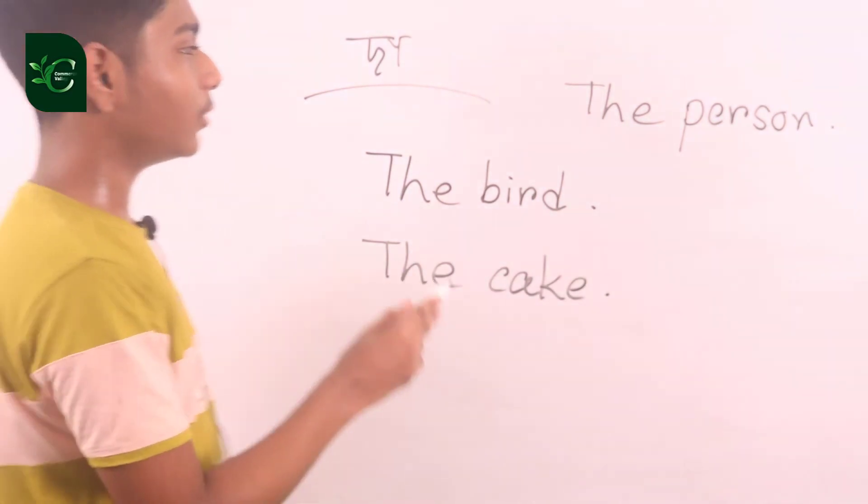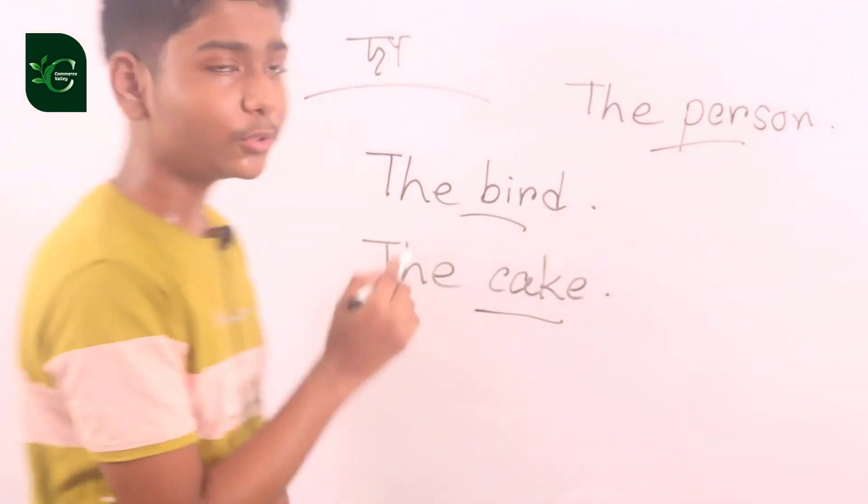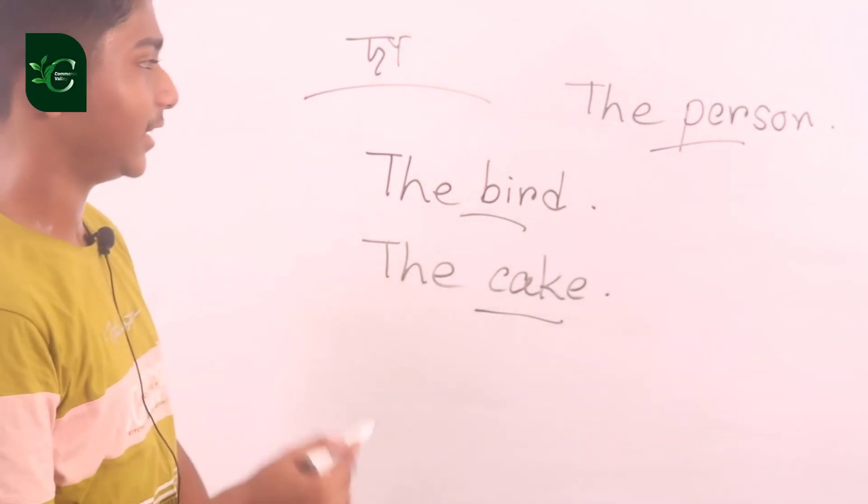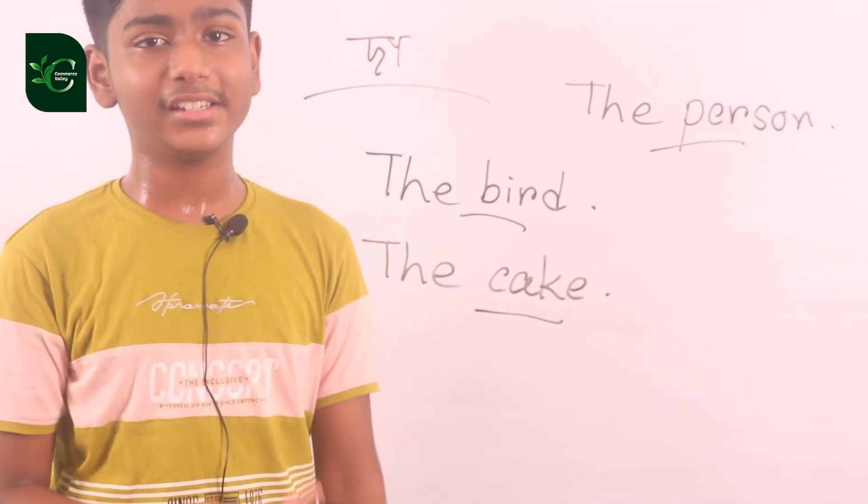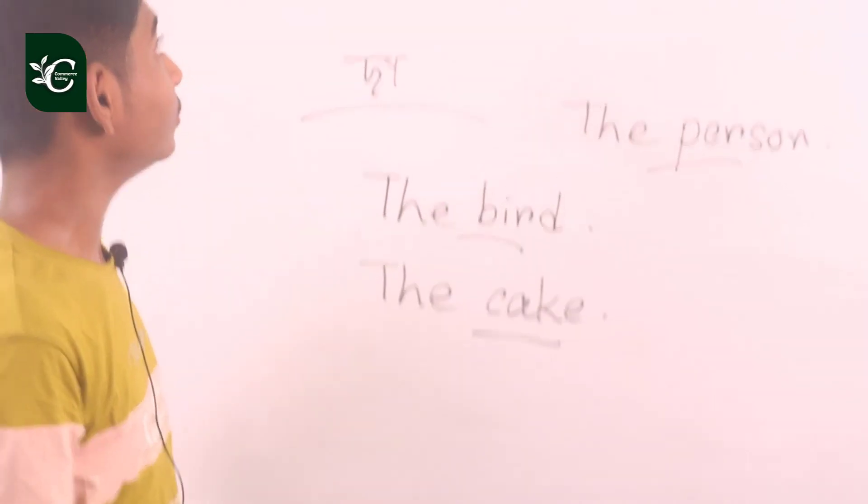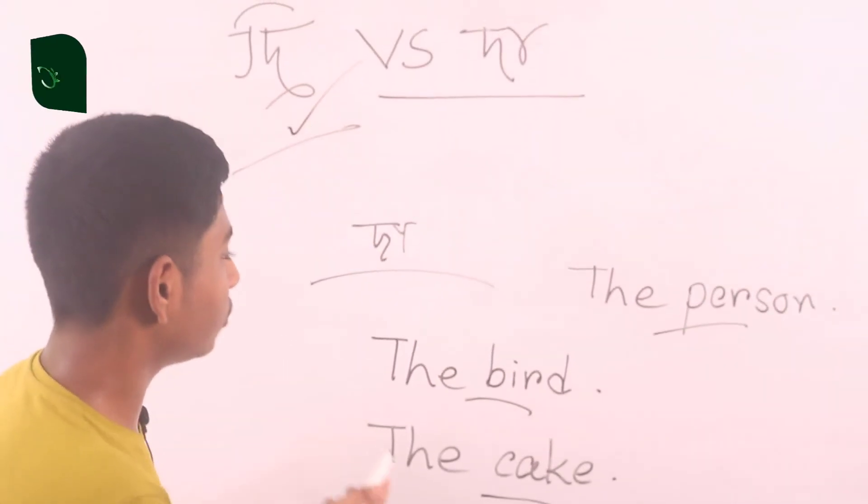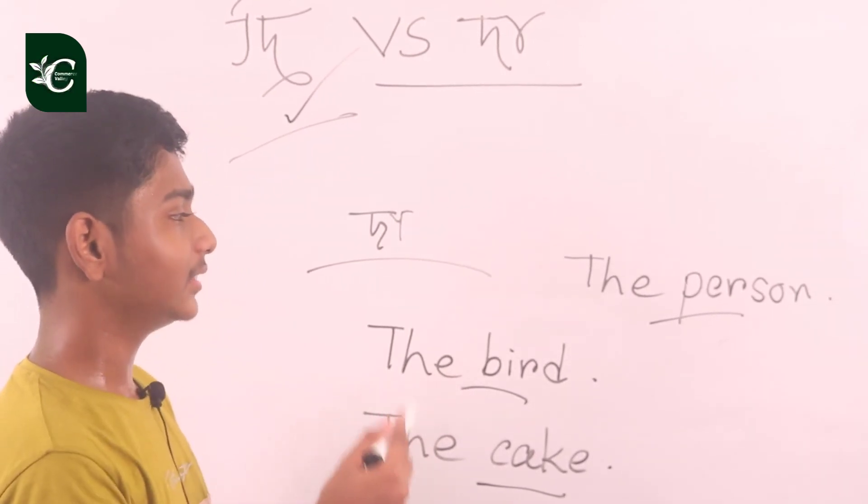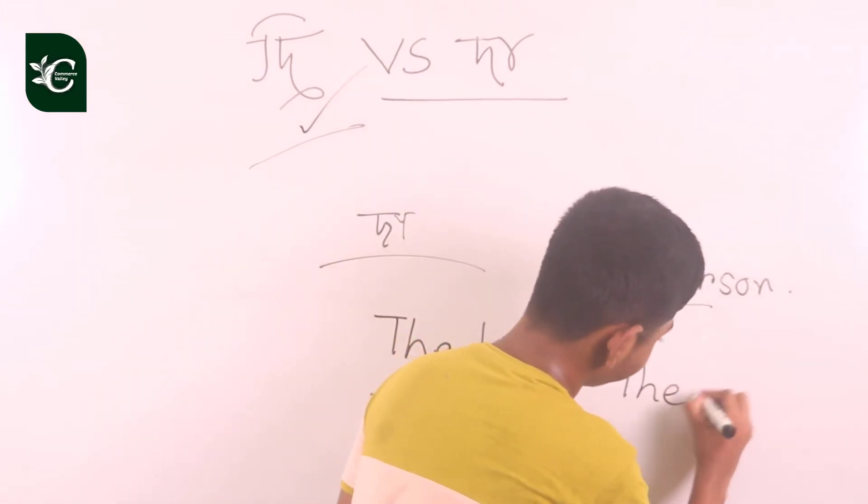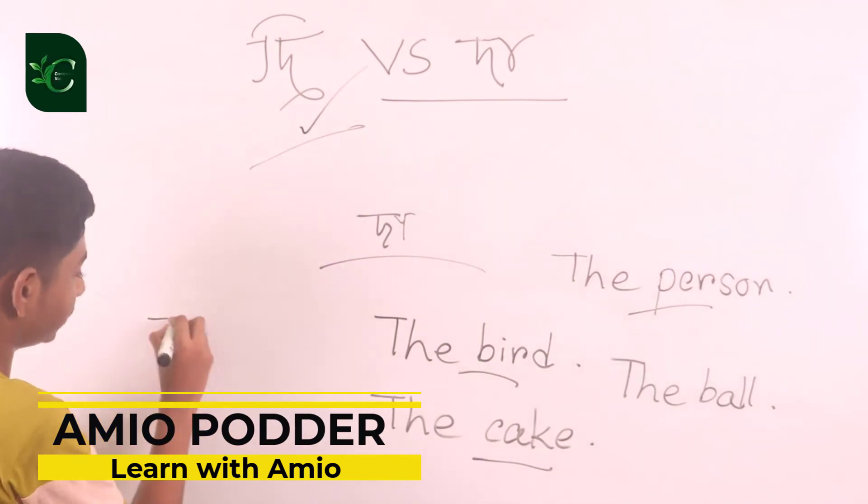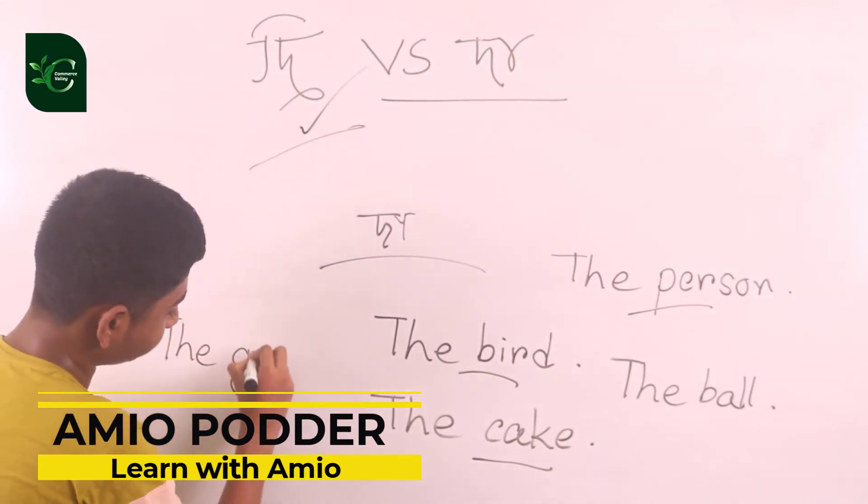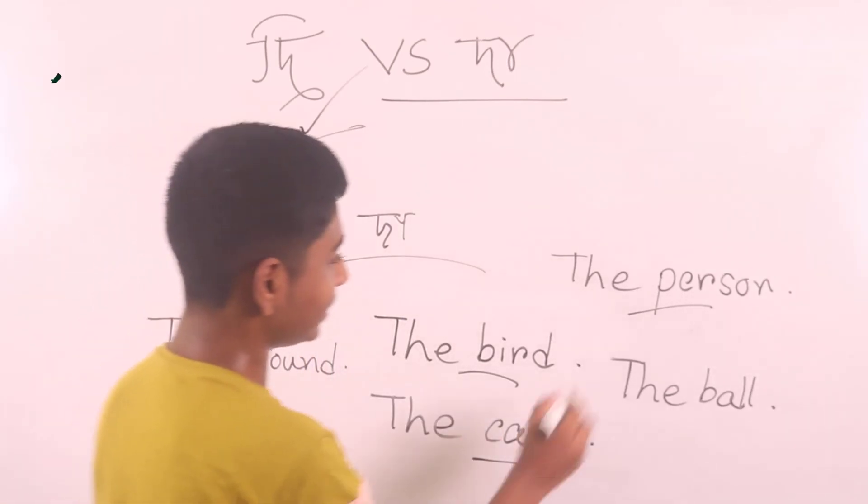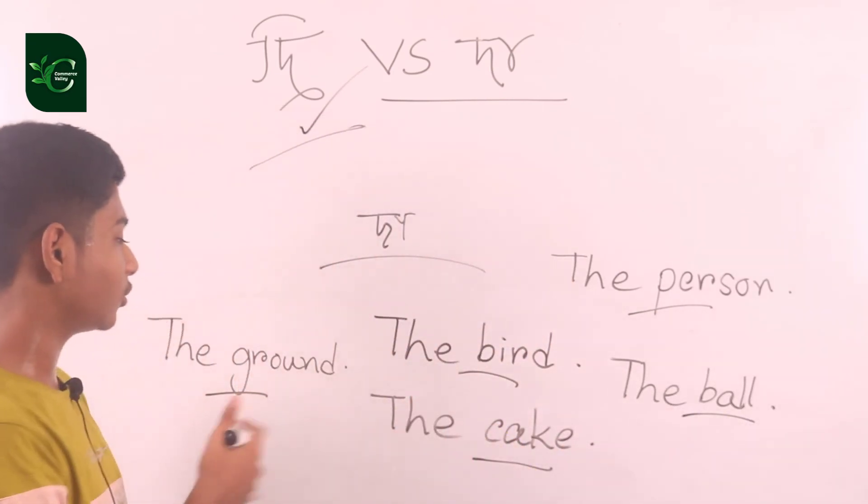B, C, P - these are consonants. When words start with consonants, we pronounce it as 'da'. When it's a vowel sound, we say 'dhi'. But when words like B, C, P start with consonants, we use 'da' pronunciation.